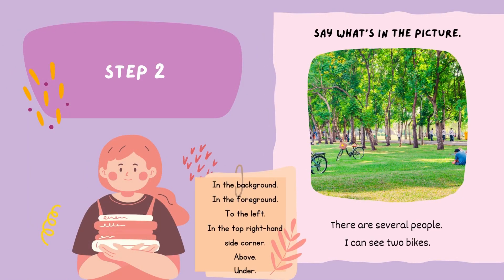Step 2: Say what's in the picture. For example: 'There are several people,' or 'I can see two bikes.' You can be very specific and use phrases like: in the background, in the foreground, to the left, in the top right-hand side corner, there are several people, under, etc.